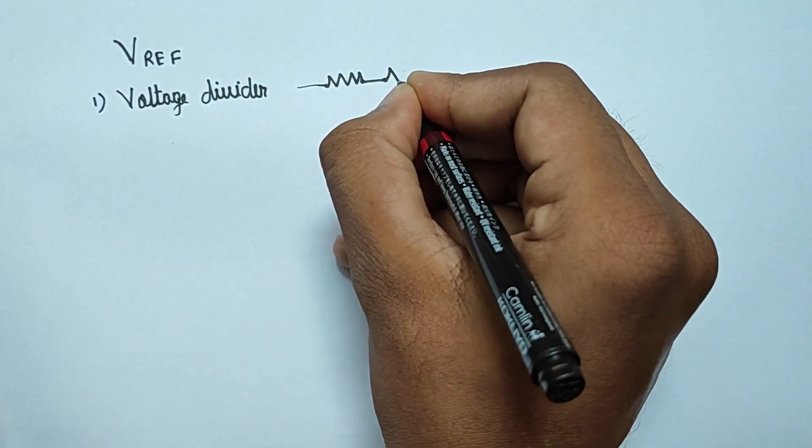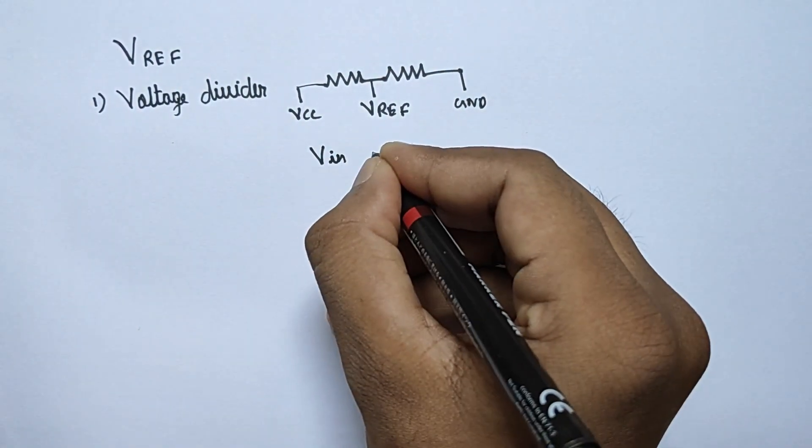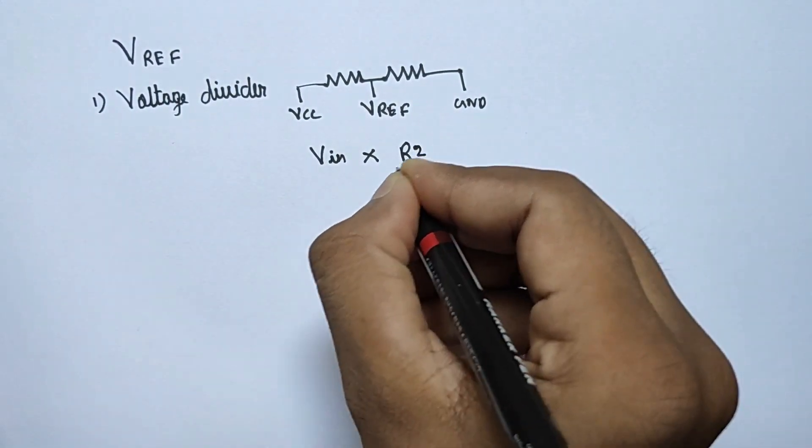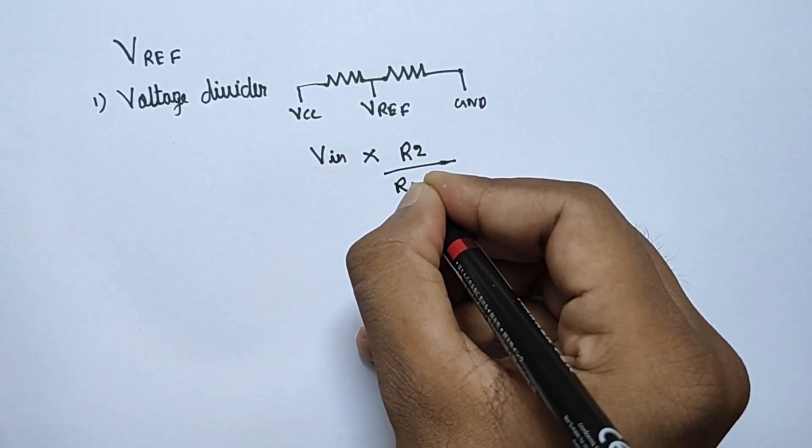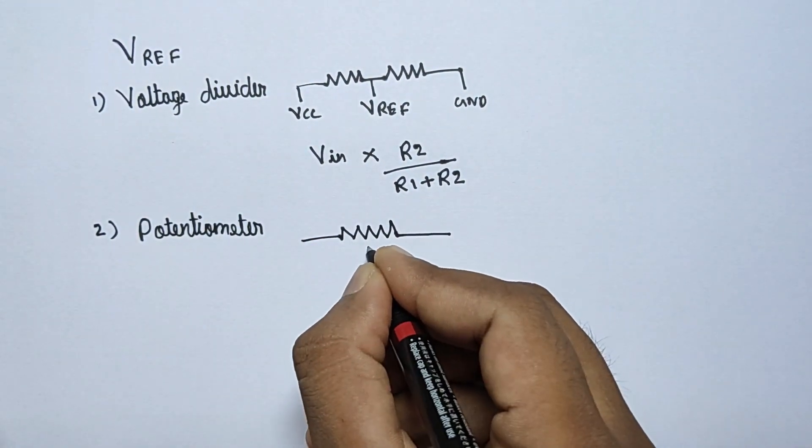To create a reference voltage, we can use a voltage divider by connecting two resistors between supply and ground. The formula to calculate is VIN times R2 divided by R1 plus R2. Another way is by using a potentiometer between supply and ground.